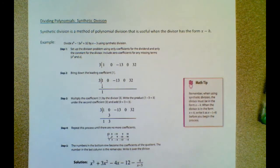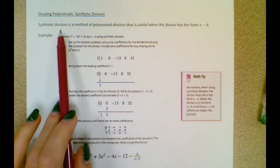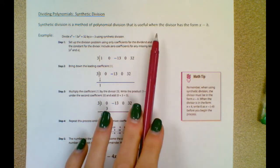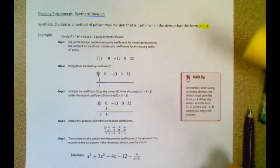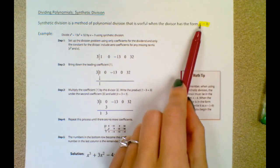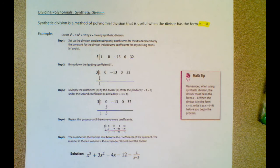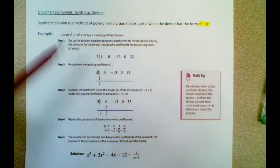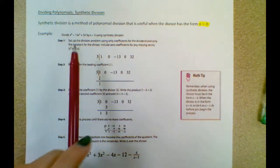The last thing we're going to talk about today is dividing polynomials. We are only going to focus on synthetic division. Synthetic division is a method of polynomial division that is useful when the divisor has the form x minus h. Notice the x has a coefficient of 1 and a degree of 1 — like it can't be x squared. If it says x squared, then you can't use synthetic division. But that's the only method we're going to focus on anyway. This is the type of problem we'd give you on a quiz or test.